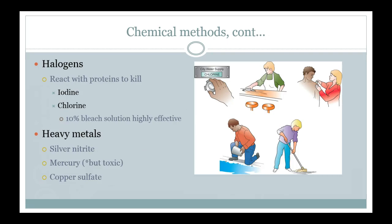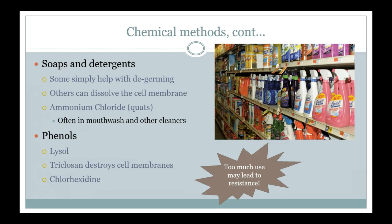Halogens like iodine — which you might find in a first-aid kit for cleaning wounds — and chlorine like bleach are effective. Ten percent bleach solution is just as effective as 100% and is far less dangerous and cheaper. Other heavy metals listed can be used but must be handled carefully as they can be toxic. Soaps and detergents may not kill everything, but they can break down cell membranes and also have a de-germing effect. Products containing QUAT compounds like aluminum chloride — such as some mouthwashes that foam — also work well.